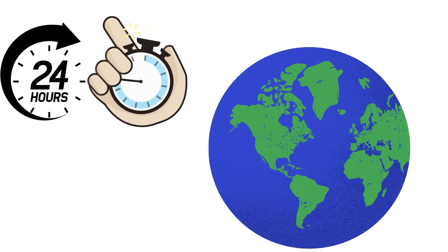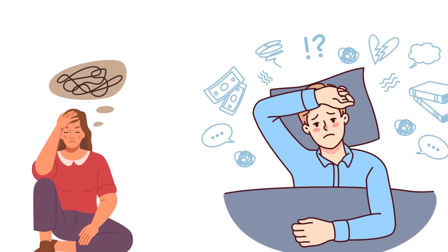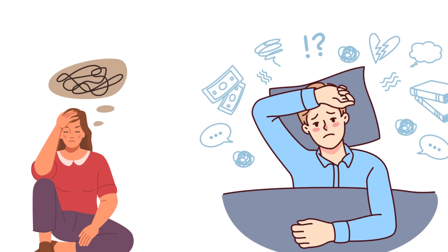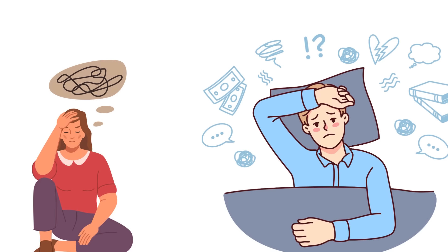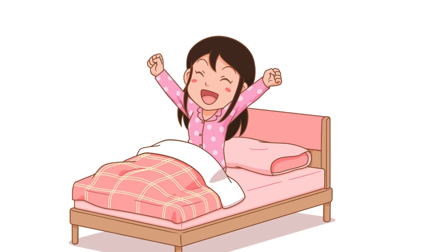But for night owls, this cycle can be a bit longer, sometimes stretching to 25 hours or more. This means that their bodies naturally want to stay up later and sleep in longer, which can be a real pain when the rest of the world insists on starting the day at ungodly hours.